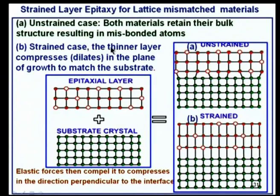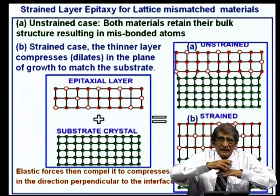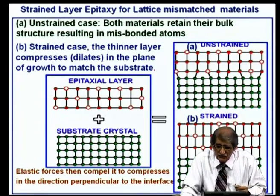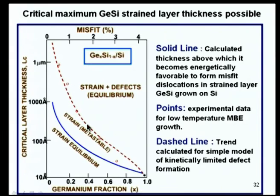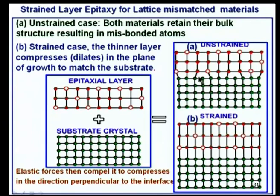When a thin layer with a larger lattice constant (e.g., Ge) is grown on a thinner substrate, the substrate pulls it back, creating compressive stress in the top layer — good for p-channel devices. Conversely, SiGe on Ge creates tensile stress useful for n-channel. There is a critical thickness beyond which the layer relaxes and becomes defective. For example, at x = 0.2 Ge content in SiGe, one can grow about 0.1 μm (1000 Å) defect-free strained layer; beyond that, defects appear. Higher Ge content reduces the allowable thickness.